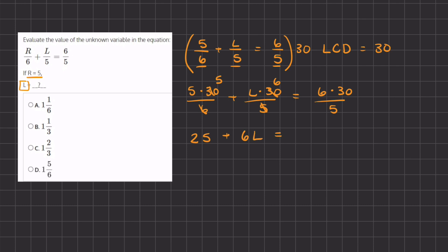So we have l times 6, which gives us 6l, equals 6 times 30 divided by 5. And we can simplify this 5 and 30, and 5 goes into 30 6 times, so we have 6 times 6, which gives us 36.